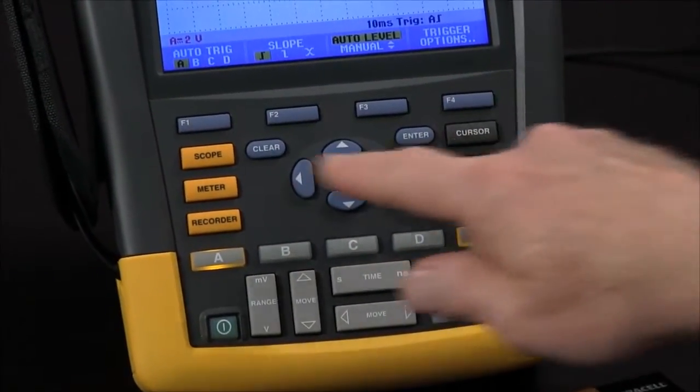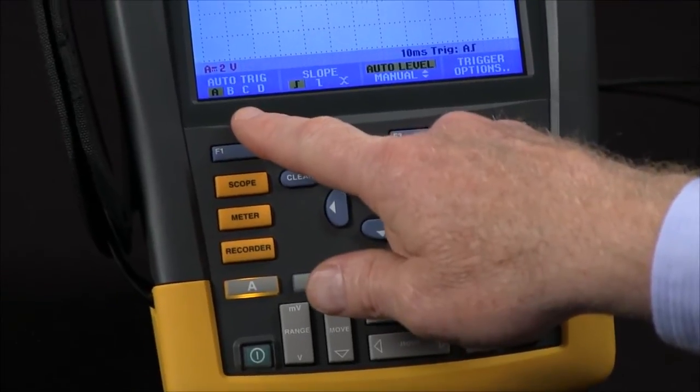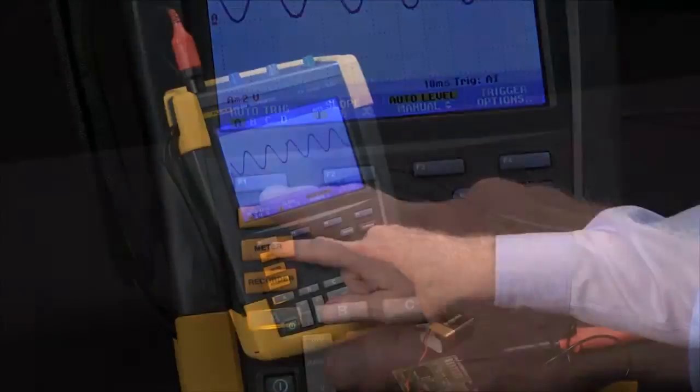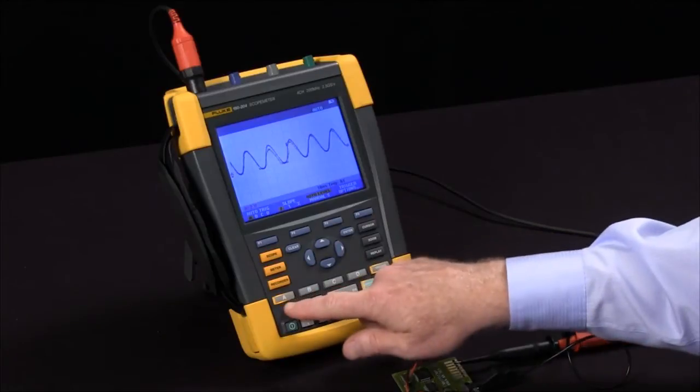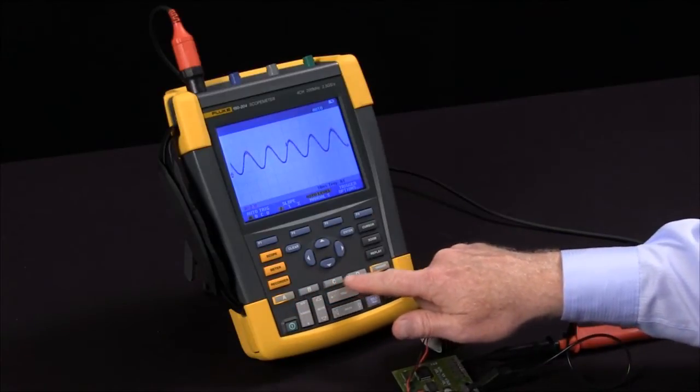It pulls up a menu for us. We can select the channel to trigger off of with the F1 key. We're on channel A right now. We could also trigger on channel B, C, or D.